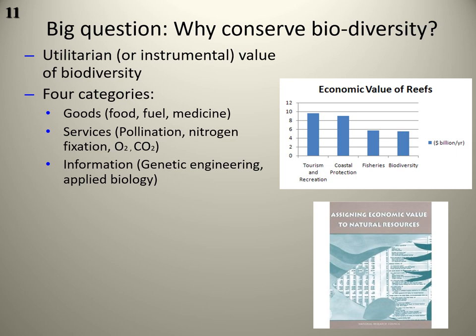Nature also provides information we can draw upon, such as genetic engineering — the vast genetic diversity found in nature can be used to create medicine and genetically modified organisms. GMOs aren't necessarily evil; it depends on how they're used. Applied biology uses ecological and biological principles found in nature and applies them to solving human and environmental problems — we looked at an example of this with agroforestry.